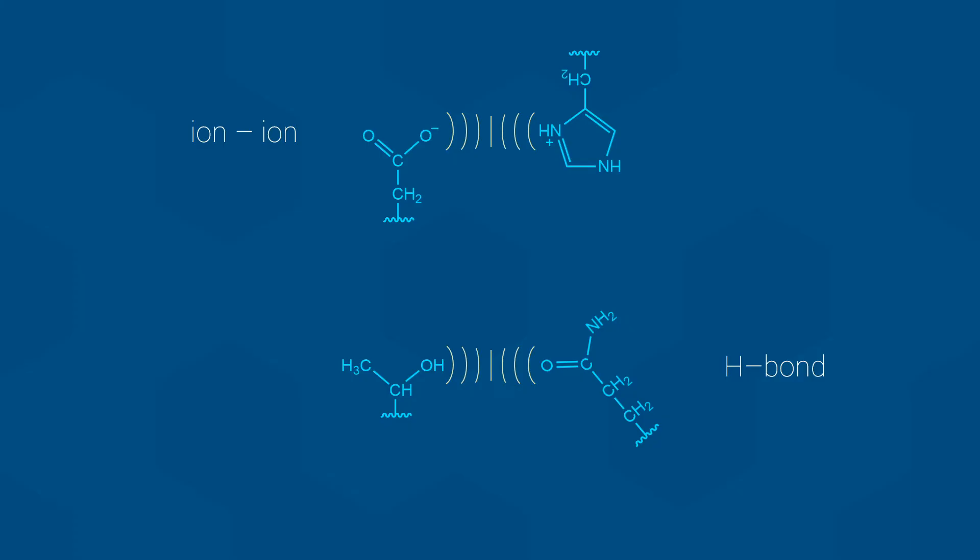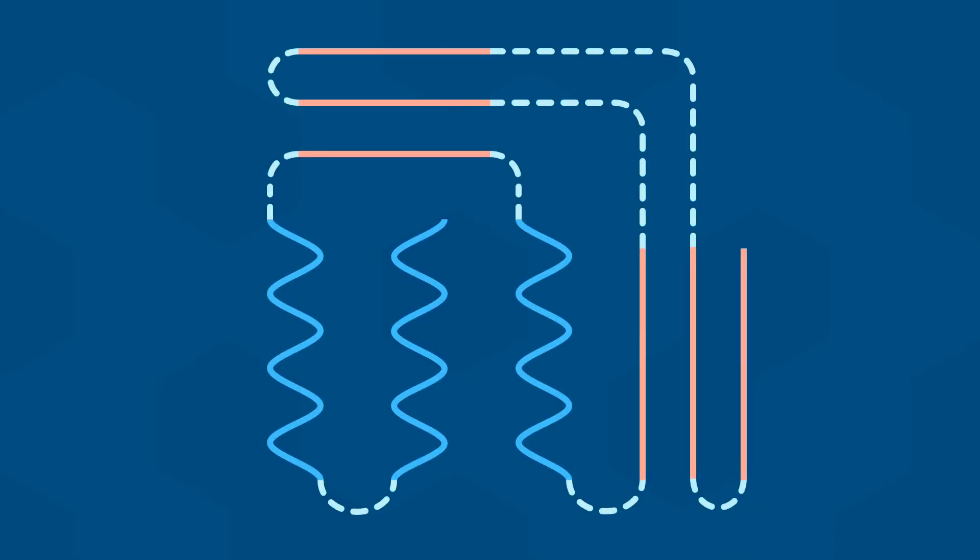Before I talk about it, it is important to note that not all proteins have this level of structure. The requirement for this level of structure is that the protein must comprise two or more individual polypeptide chains. As you saw earlier, RNase consists of a single amino acid chain, and therefore does not qualify.